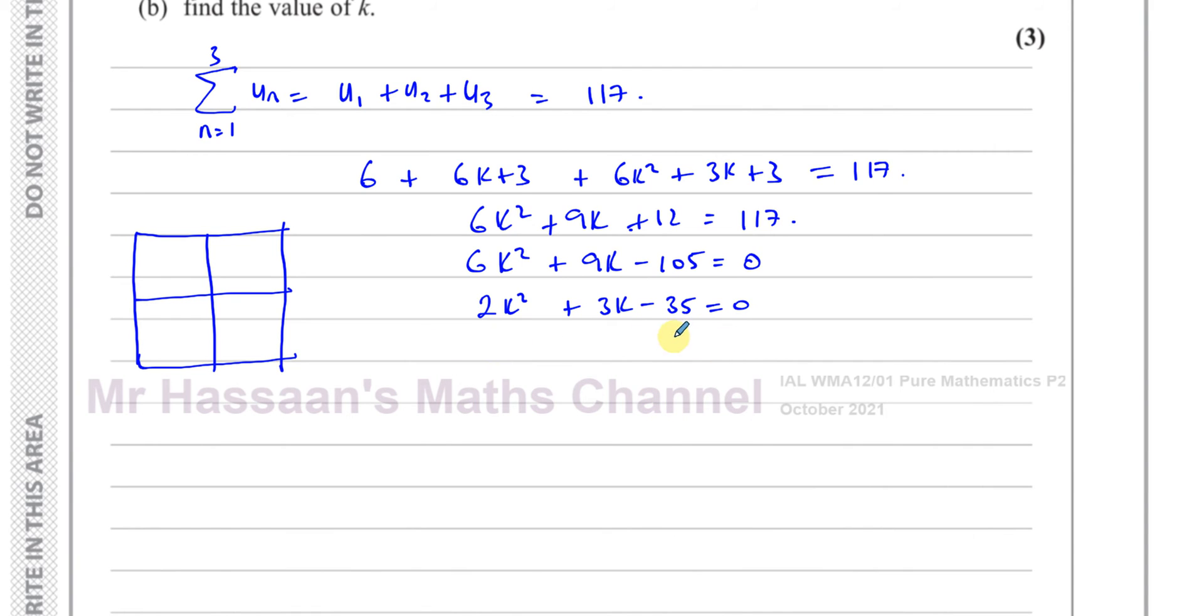You can do guessing and checking or splitting the middle term. This is my version of splitting the middle term, where I make a little box. So 2K squared and minus 35. I have two numbers multiplied to give me minus 70K squared, and the sum of these two numbers must be plus 3K.